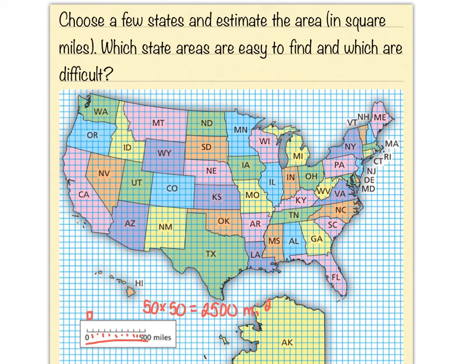If you were asked to find the area of one of these states, the easiest ones would be in the western part of the United States — Colorado or Wyoming — because those states are very rectangular. Even New Mexico and Nevada have straight edges. States like Florida are irregular, making them harder to count. These states are representative of what we're talking about today: composite figures, which are figures made up of other shapes.